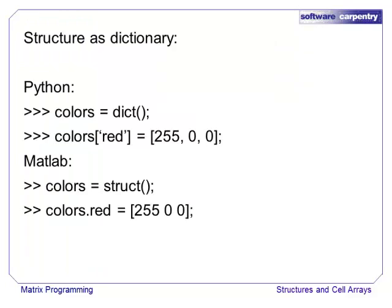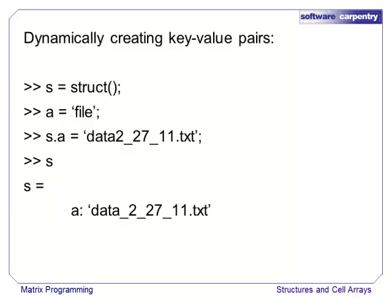If you are familiar with dictionaries in another language, this should look familiar. For instance, in Python, we can recreate colors as a dictionary. Each key is a string and each value is an array with three elements. As this example shows, care must be taken when creating key-value pairs dynamically.